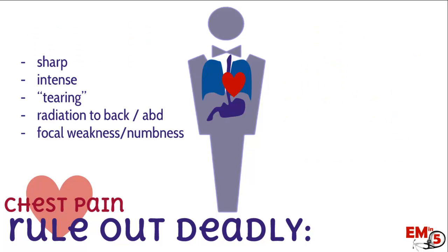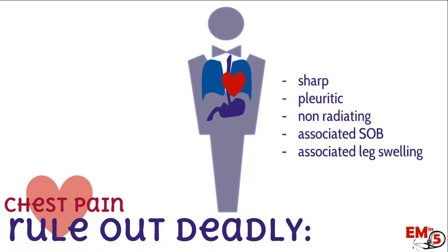What if instead the patient describes a tearing sensation — really sharp but intense — going into their back and abdomen, and they also feel weak and numb on the left leg? That's aortic dissection. Anytime you have a patient with chest pain and a focal weakness, you have to rule out aortic dissection.